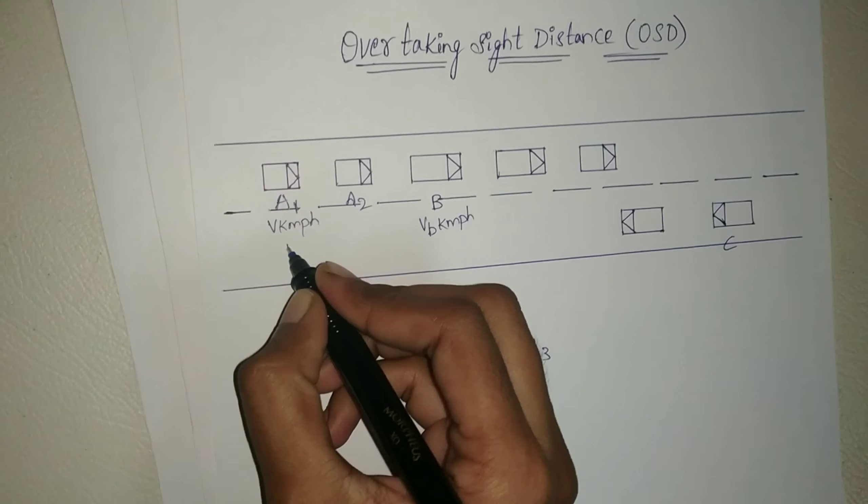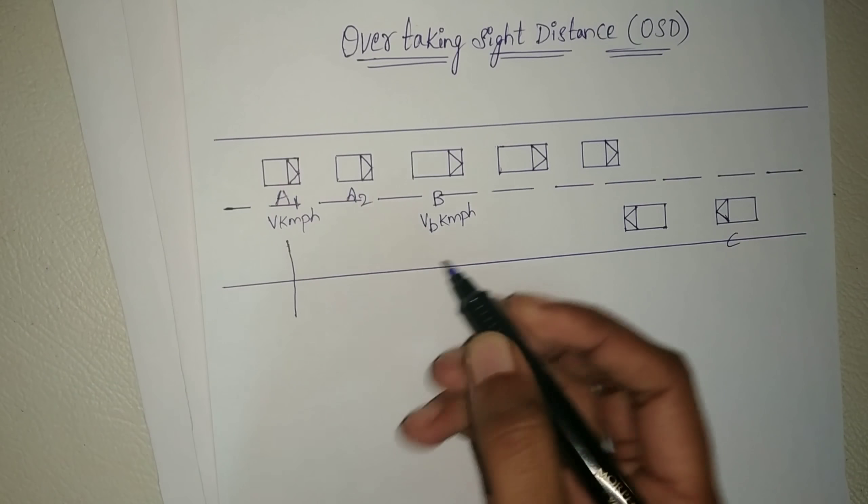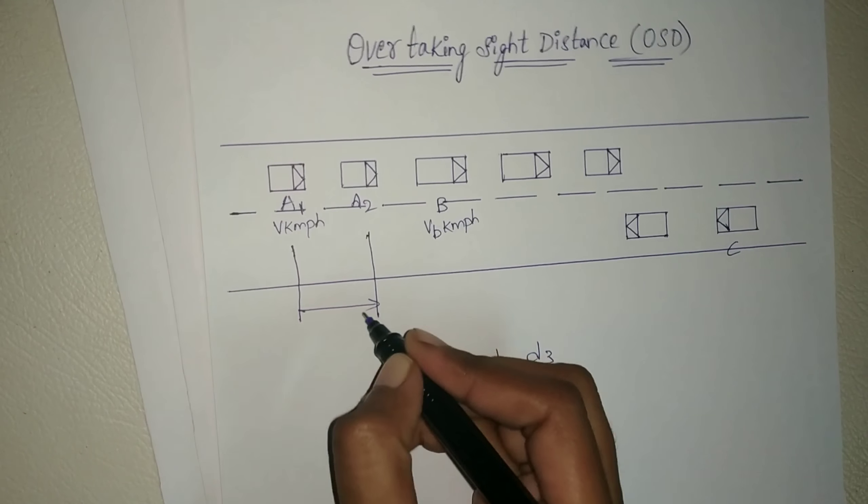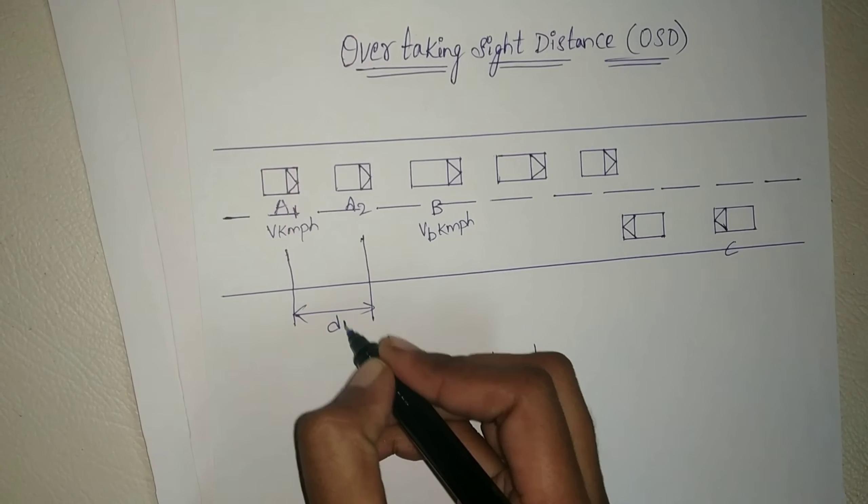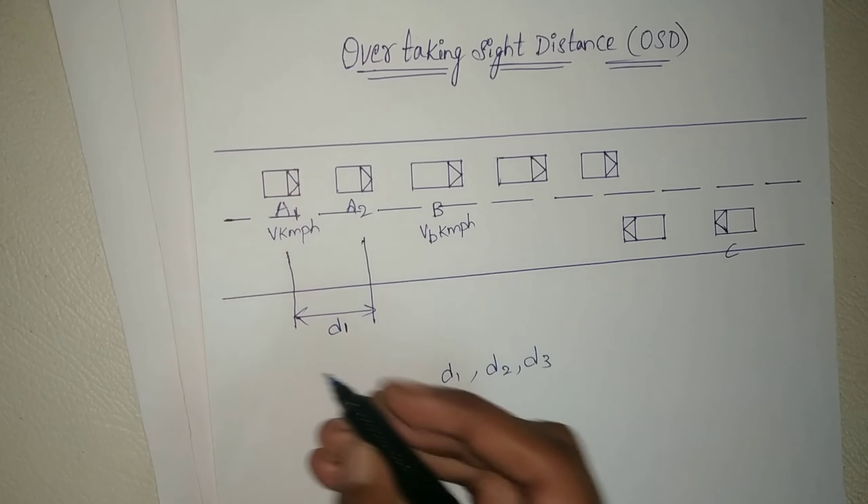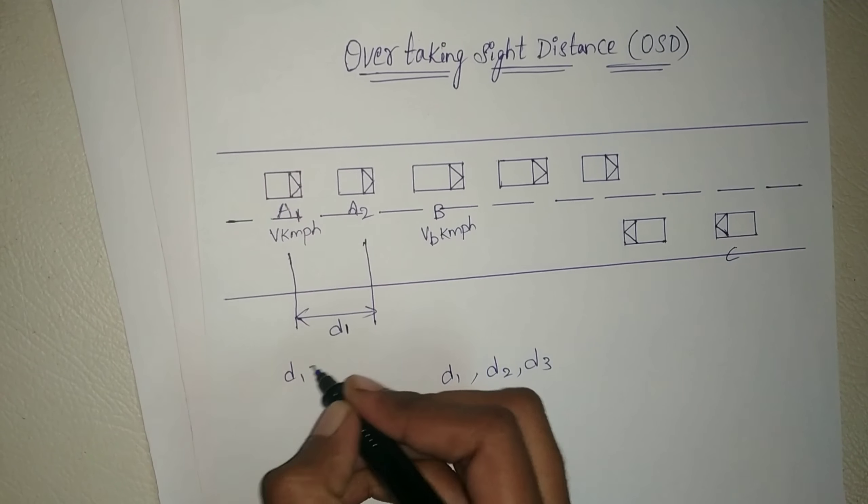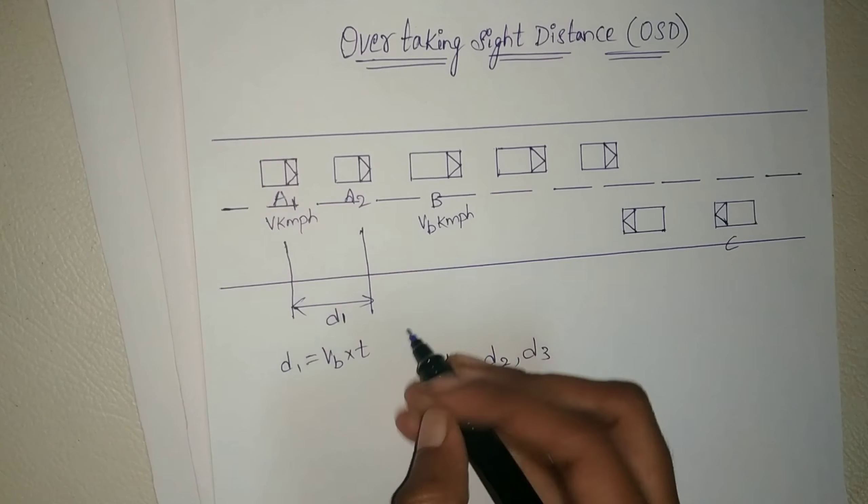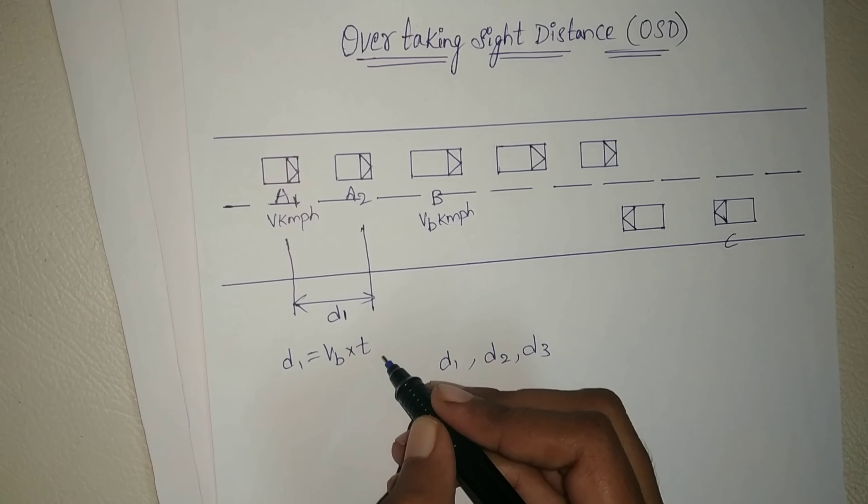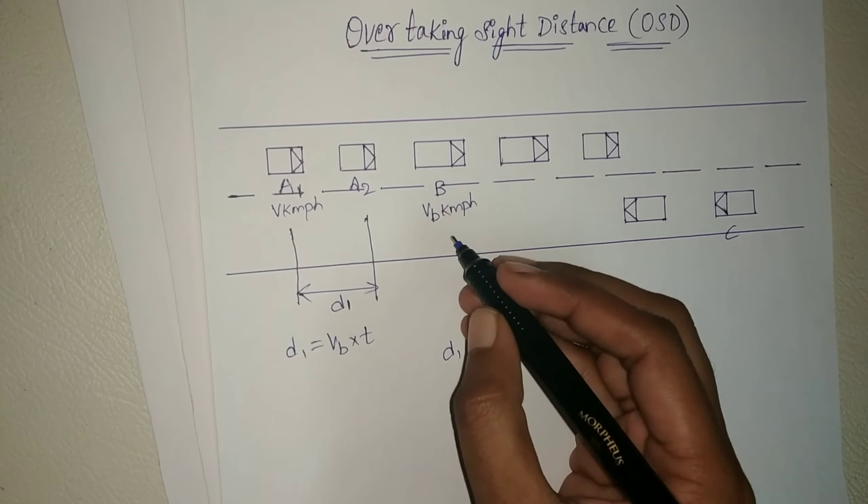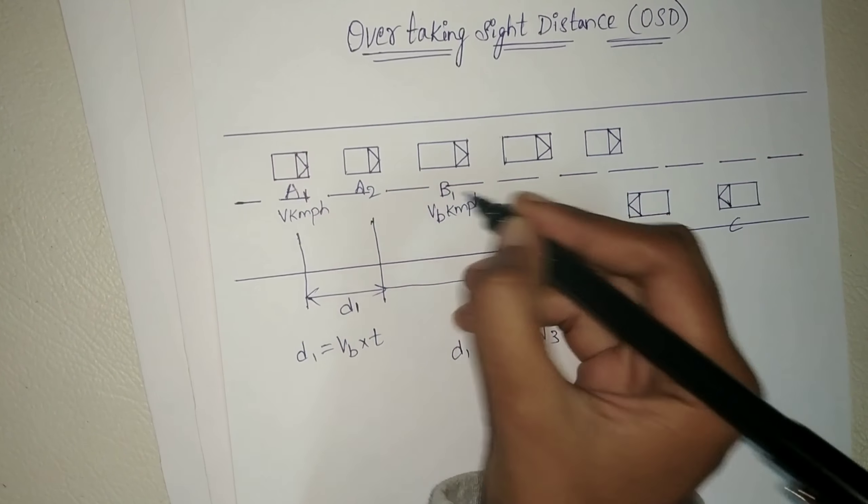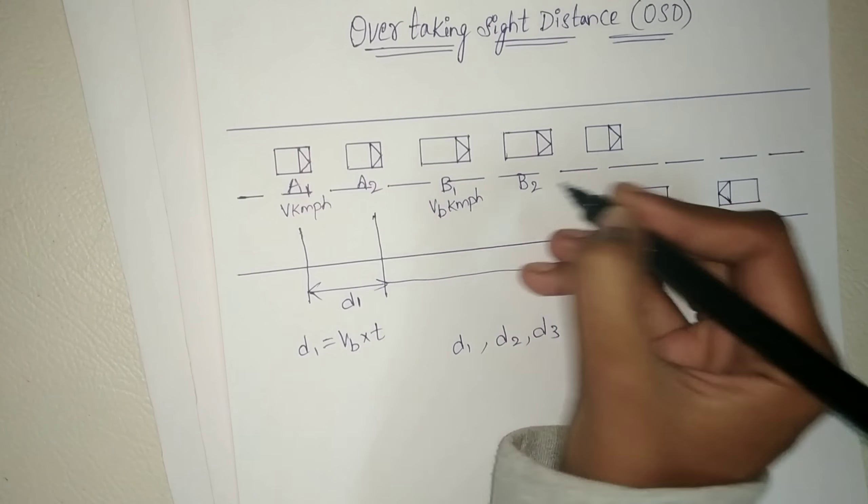That is d1 is from A1 to A2. Then d1 will be Vb times t, where t is the reaction time. And d2 is the distance traveled from position A2 to A3.